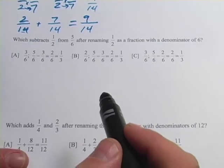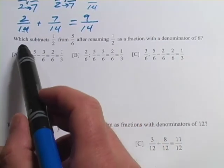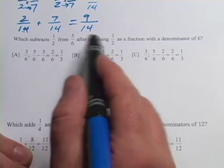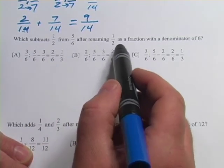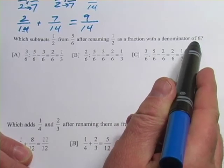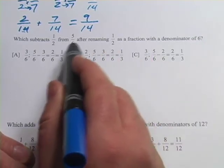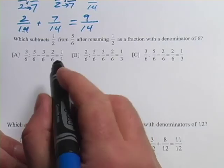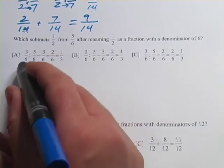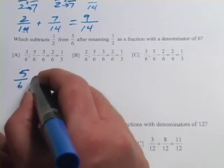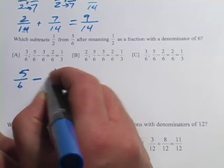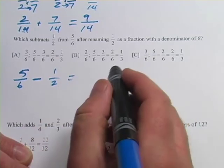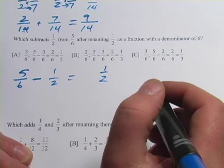Let's try another one of these. This next one is actually a little bit easier. It says, which subtracts 1/2 from 5/6 after renaming 1/2 as a fraction with a denominator of 6? So to get the common denominator here, we leave the 5/6 alone. We're just changing the 1/2, so a little less work. Which subtracts 1/2 from 5/6? So the problem is going to look like this. 5/6 minus 1/2, except we're going to change that 1/2 so it's in sixths, equals something or other.